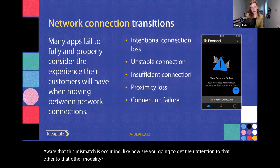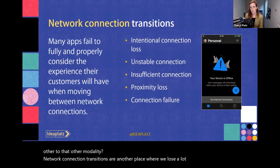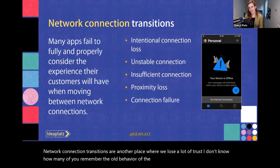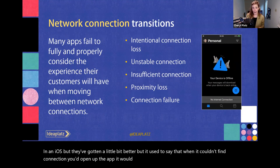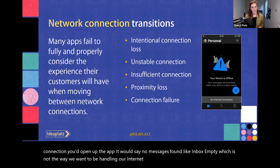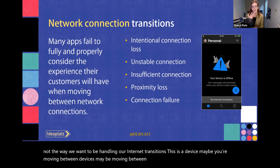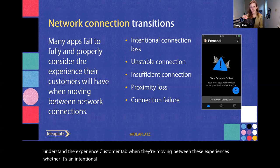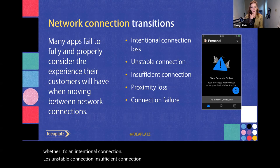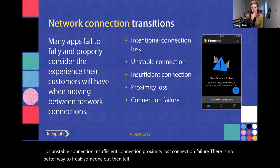Pay special attention to your input and output cliffs — the rough edges between interactions. Ideally you're helping bridge those interactions instead of people falling off the edge. An input transition is when people move between two or more input modalities in a single activity — like the Xbox example where you're speaking and suddenly need to pick up the controller. An output transition is like Siri speaking to you and then directing your attention to the screen because the answer is there. An input-output mismatch is where you speak to a system and it gives you a visual response instead of an acoustic one — especially difficult because you have to hope the customer notices that mismatch. Network connection transitions are another place we lose trust: the old Exchange app on iOS would say 'inbox empty' when it couldn't find a connection — not the right approach. A much better message is simply 'your device is offline.'